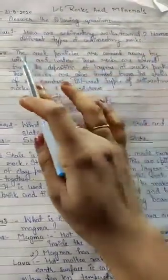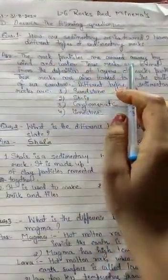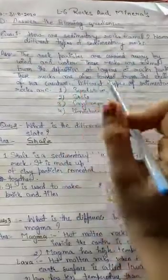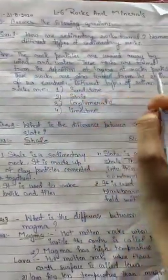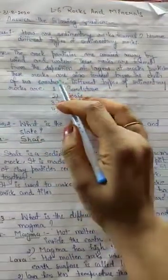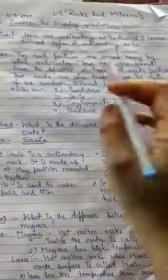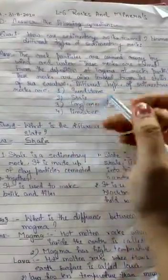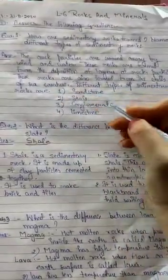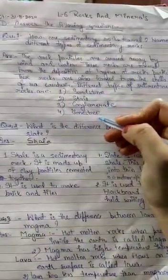Let's read the answer first. First, the rock particles are carried away by the wind and water. These rocks are formed from the deposition of layers of rock particles. These rocks are also formed from the shells of sea creatures. Different types of sedimentary rocks are sandstone, shale, conglomerate and limestone.